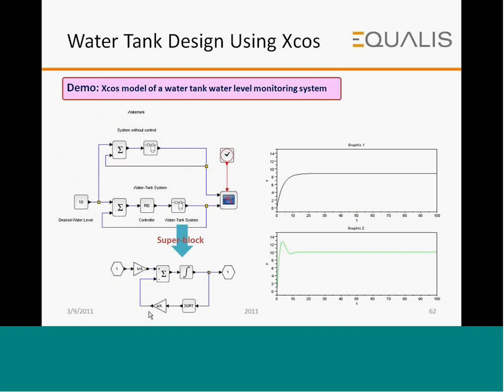Water tank design using Xcos: there is a desired water level and a water tank system with a PID controller. The multiplex plot shows the output from the system and the desired water level. The graph shows Y as a function of time for the control level, and also shows how the system responds when a disturbance is added.